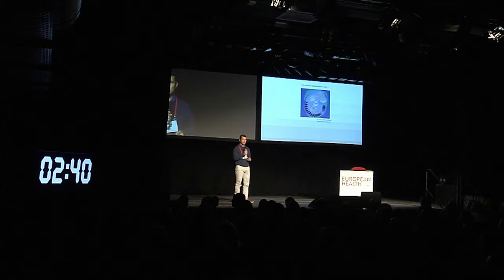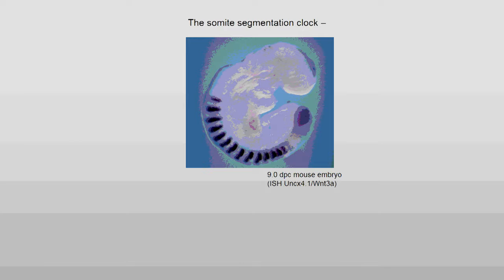In the developmental context, there's a clock ticking in vertebral embryos — the segmentation clock. This clock controls the formation of somites, which you can see here in this mouse embryo, and will form your vertebral column. These somites form periodically, and this clock consists of several pathways.